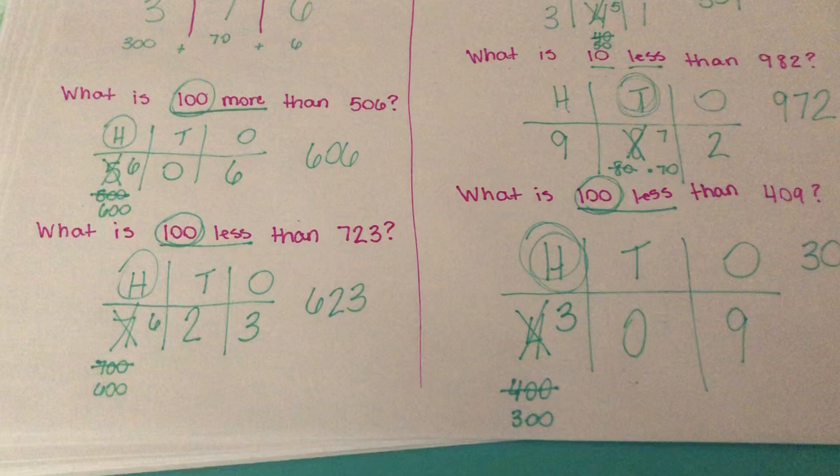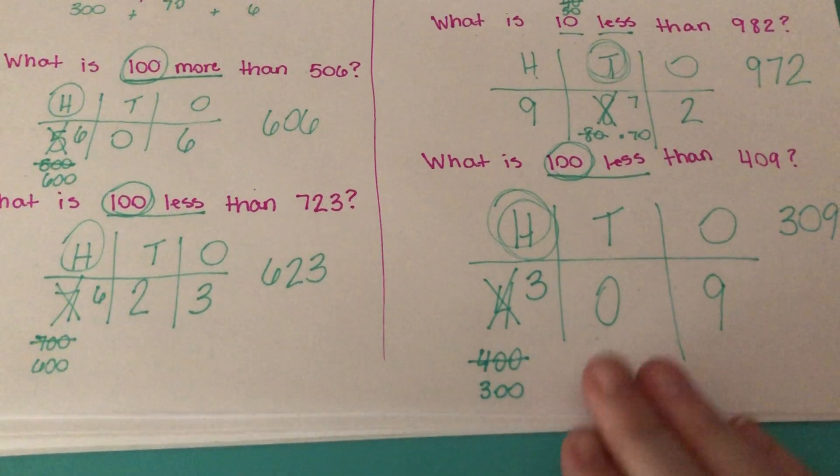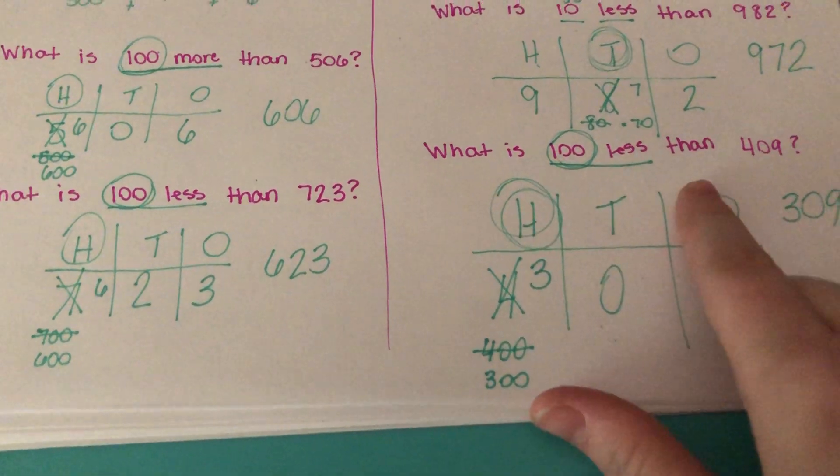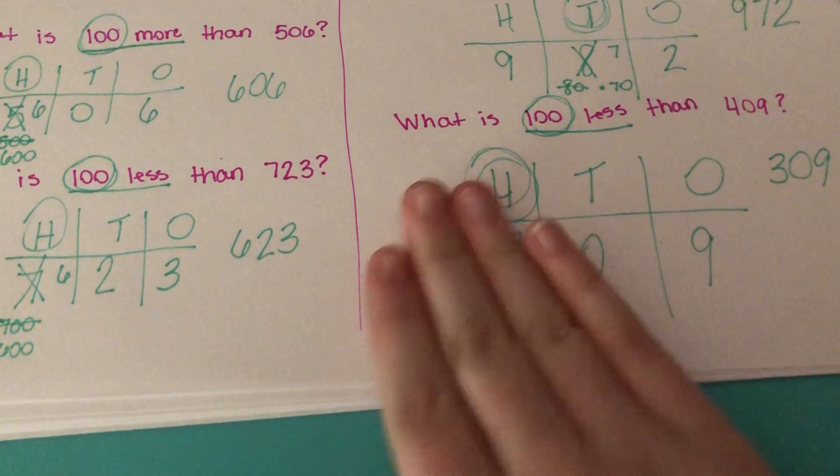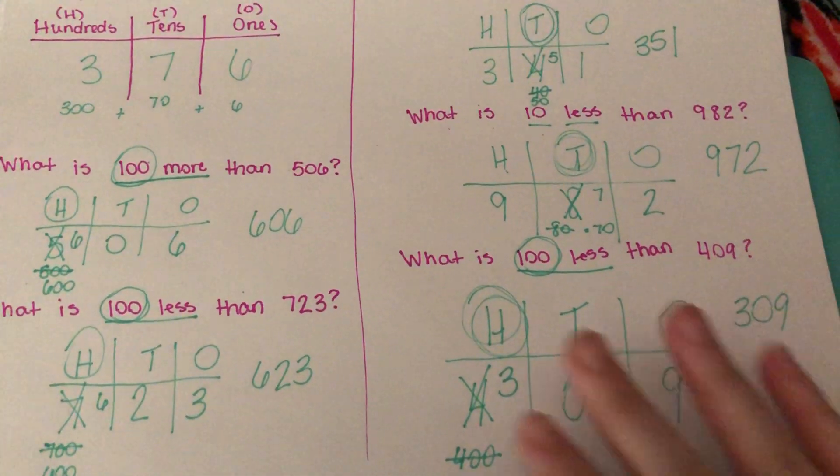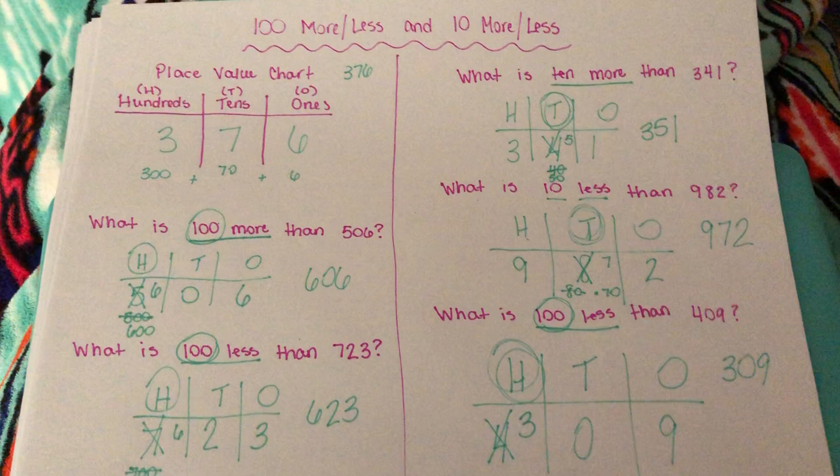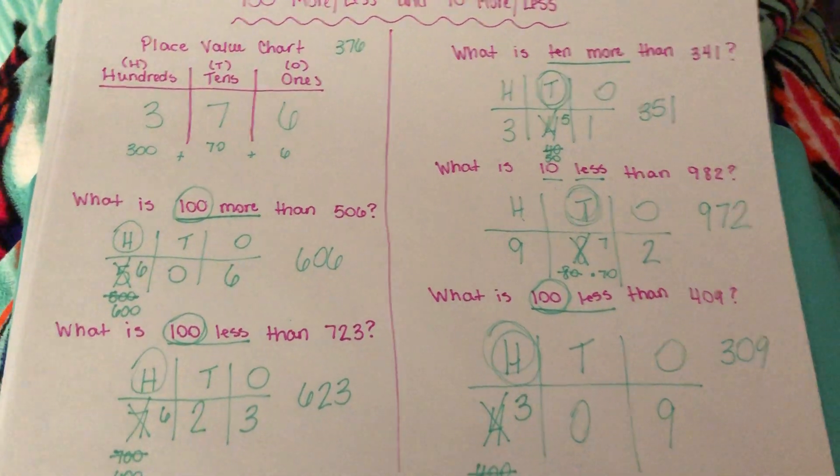If you do make additional examples for your kids, don't worry about doing anything where you're going to have to borrow. For example, if I asked for 10 less in here, that would take us down to the 300s and you'd have to change the hundreds place as well. Don't worry about doing that. Give them pretty basic ones where they won't have to borrow and regroup and do all of that. If you have any more questions about this or would like to see any additional examples, please feel free to email me. Thank you.